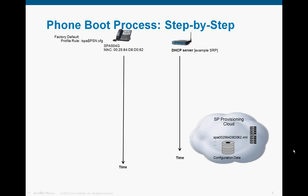Here's step-by-step the phone's boot process. In the top-left corner we have a phone set at factory default — a SPAR 504 in this example — and we've got a DHCP server, in this case the Services Ready Platform. Down in the bottom right, we've got a service provider provisioning cloud with a bunch of servers holding the phone's configuration information.